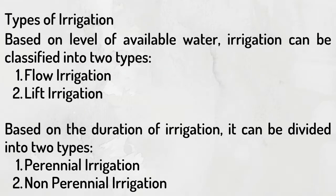Types of irrigation: Based on the level of available water, irrigation can be classified into two types — Number 1: Flow irrigation, and Number 2: Lift irrigation. Based on the duration of irrigation, it can be divided into two types — Number 1: Perennial irrigation, and Number 2: Non-perennial irrigation.